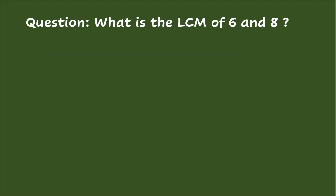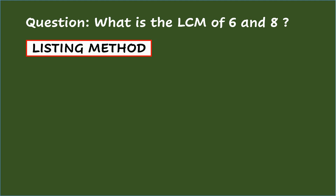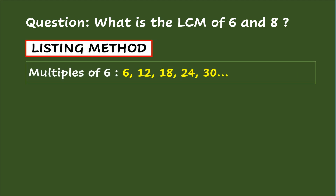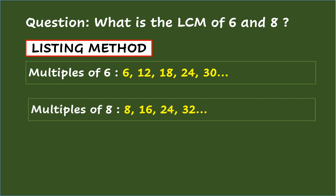Question: what is the LCM of 6 and 8? The first of the three ways to get the LCM is using the listing method. Here, you list all the multiples of 6 and multiples of 8. So, for multiples of 6, we have 6, 12, 18, 24, 30, and so on.